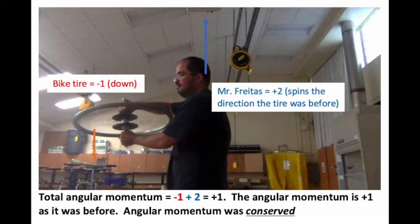Since Mr. Freitas and the platform are actually very massive, that's actually more angular momentum. So let's assume it's double. So what we have is Mr. Freitas has an angular momentum of plus two. The bike tire has an angular momentum of negative one. Plus two minus one is plus one.